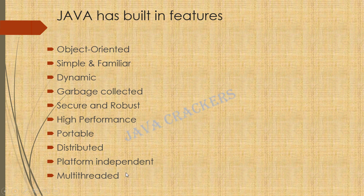Java is portable because of the Just-In-Time compiler feature. It is also distributed — by making use of RMI and EJB, Java supports distributed computing. We can access files by calling methods from any machine on the internet. For example, if I write a program on my laptop, someone else in another location can access the methods in that class through the internet — Java supports this.